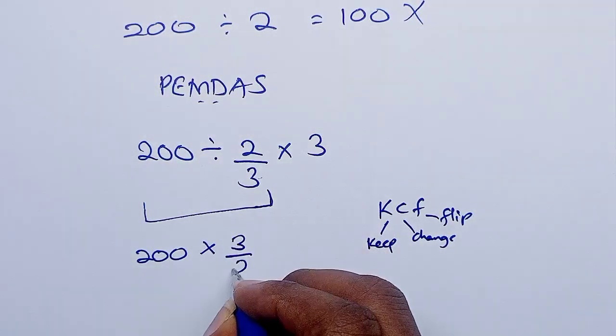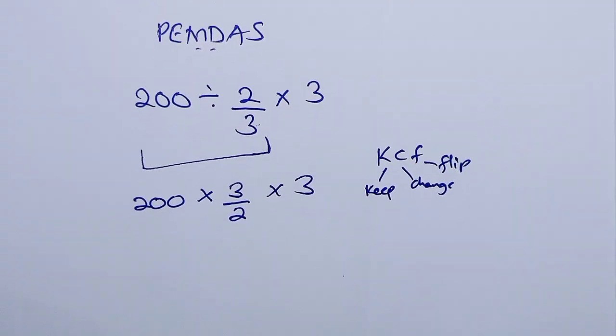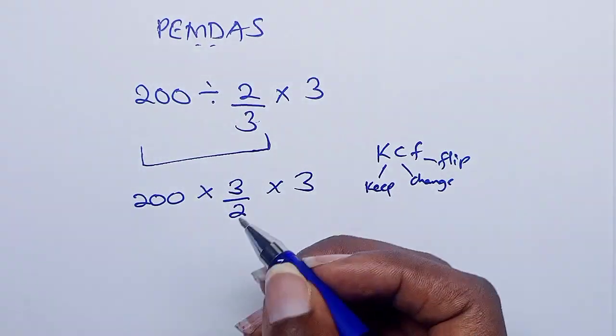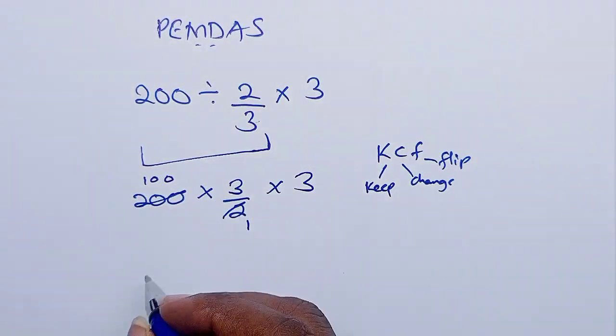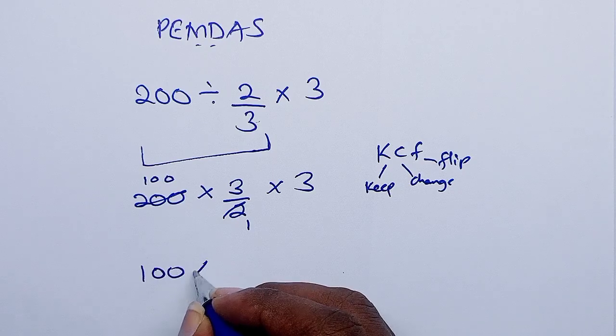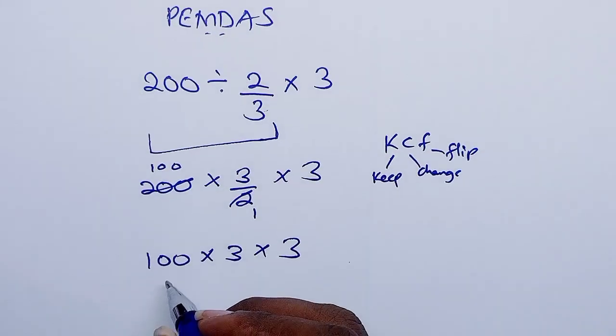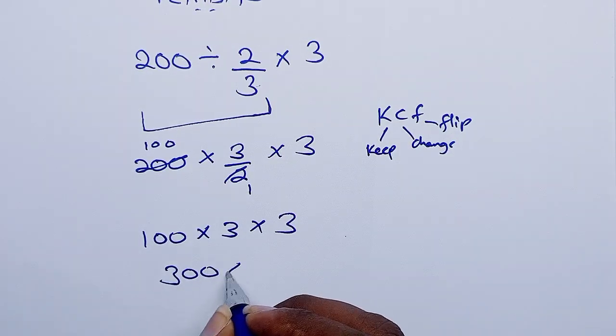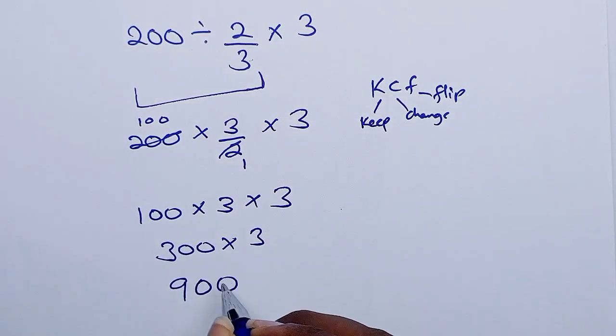200 divided by 2 is 100, so we shall have 100 times 3 times 3. 100 times 3 is 300, times 3 is 900.